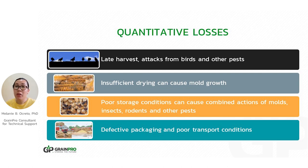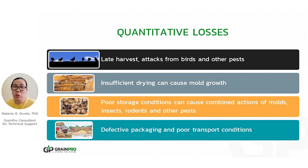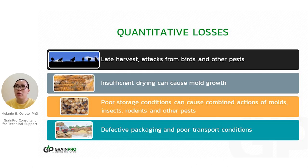Some people also use defective packaging, so some food becomes waste because of spillage. During transport, if the packaging is not good, we are allowing the commodity to get wet during sudden rain, and spillage occurs if the packaging has holes or leaks. This results in quantitative losses.